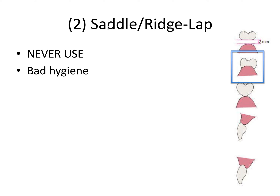The second pontic design is the saddle pontic or ridge lap pontic, and this one you really should never use. Like a saddle on a horse, it firmly wraps around the ridge, so there's no way to fit a brush underneath to keep it clean. It's very bad for hygiene — a lot of things can get caught under there, leading to periodontal problems around the abutment teeth and eventual failure of the bridge.